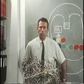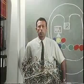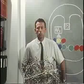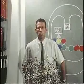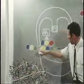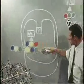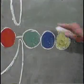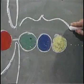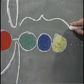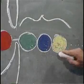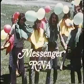Our genes carry the instructions for ordering the amino acids of each protein. Those instructions are encoded in a messenger molecule, an RNA, depicted in this film as a long, snaking chain. Each of the message units is played by three adjacent people in the chain. Colored head balloons indicate the bases: green for guanine, blue for uracil, yellow for adenine.